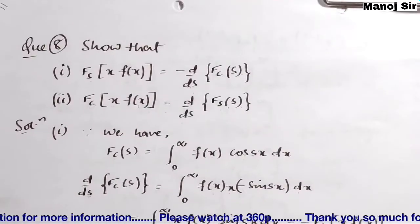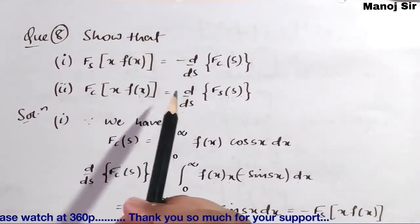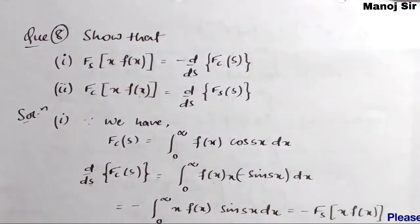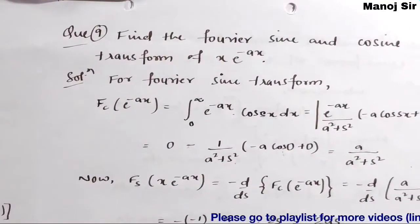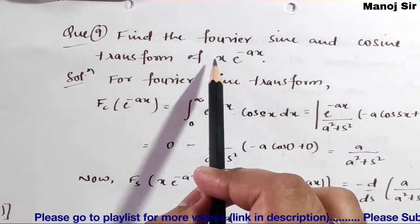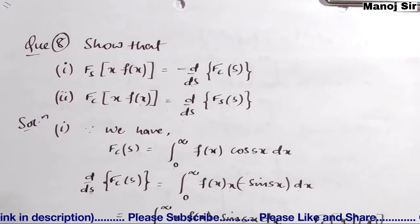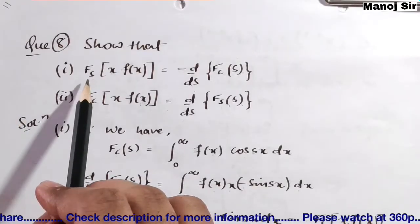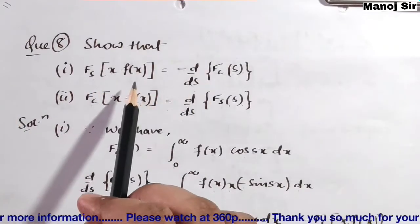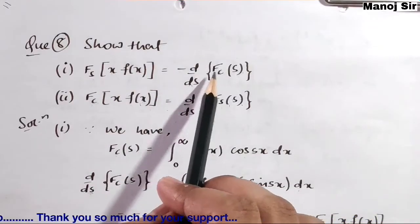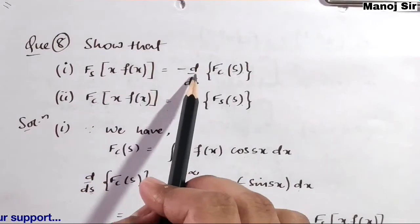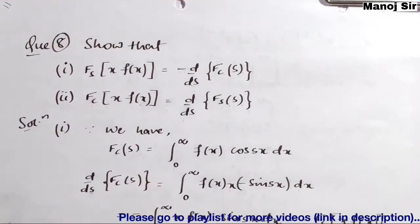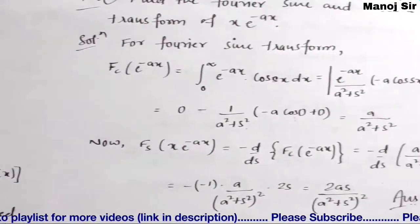As we proved in the previous video, if x is multiplied with some function f(x) — like here, where the function is x·e^(-ax) — and if we let e^(-ax) be f(x), then we have x·f(x). In that case, if you want to find the Fourier sine transform, we simply find the Fourier cosine transform of f(x), then differentiate with respect to s and put a negative sign. That gives the Fourier sine transform of x·f(x).